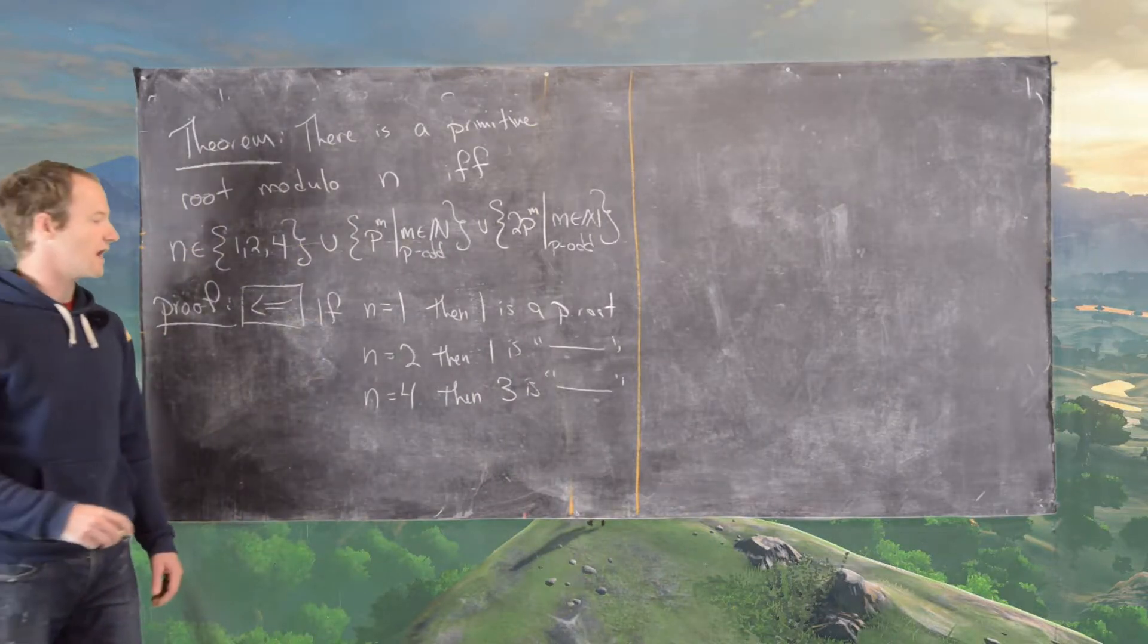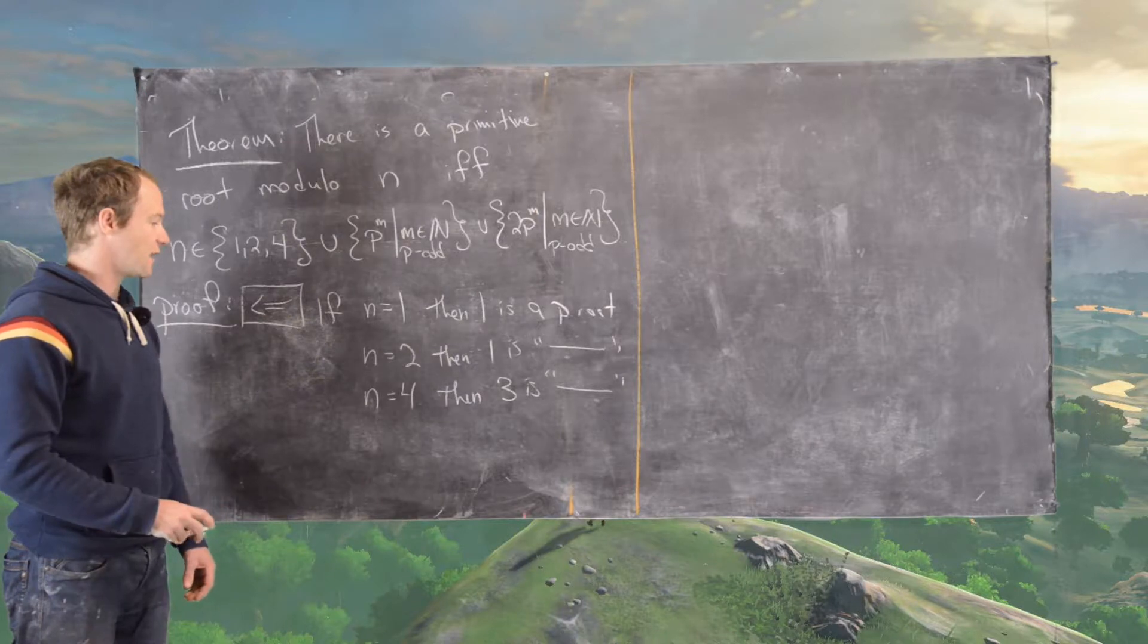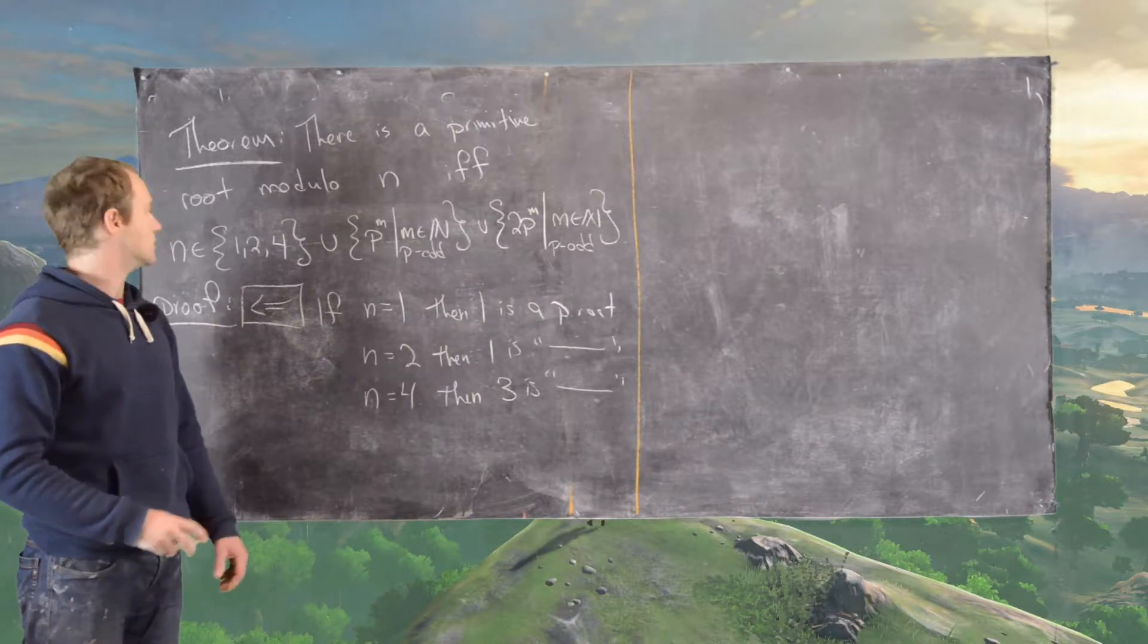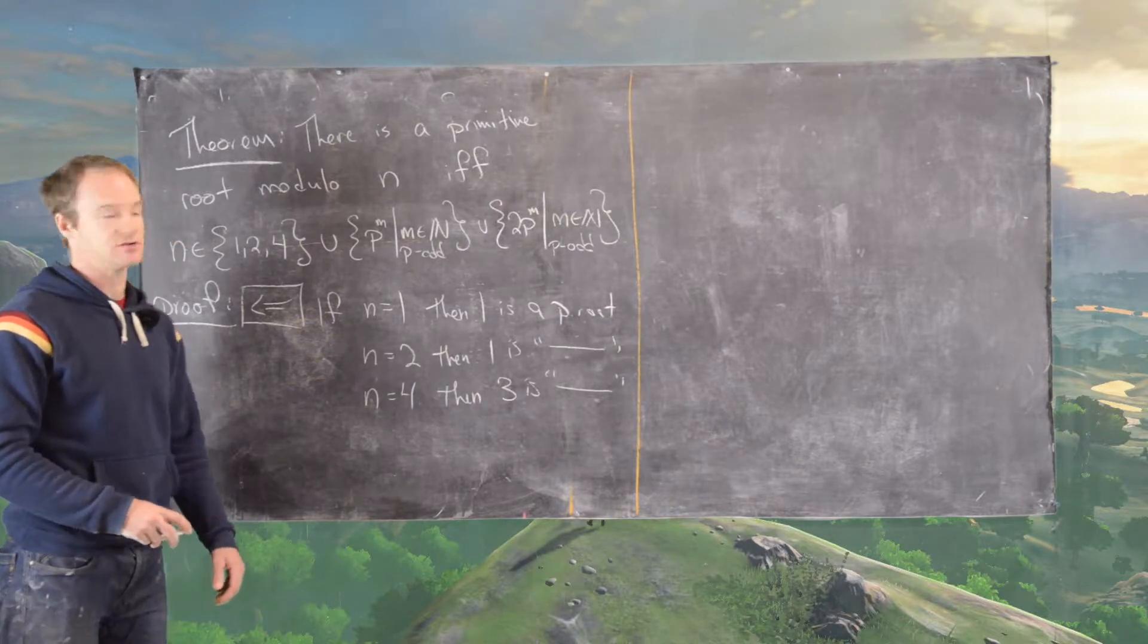And that's because we have 3 times 3, which is 9, which is 1 modulo 4, and so 1 and 3 are the only numbers that we have to get to modulo 4.